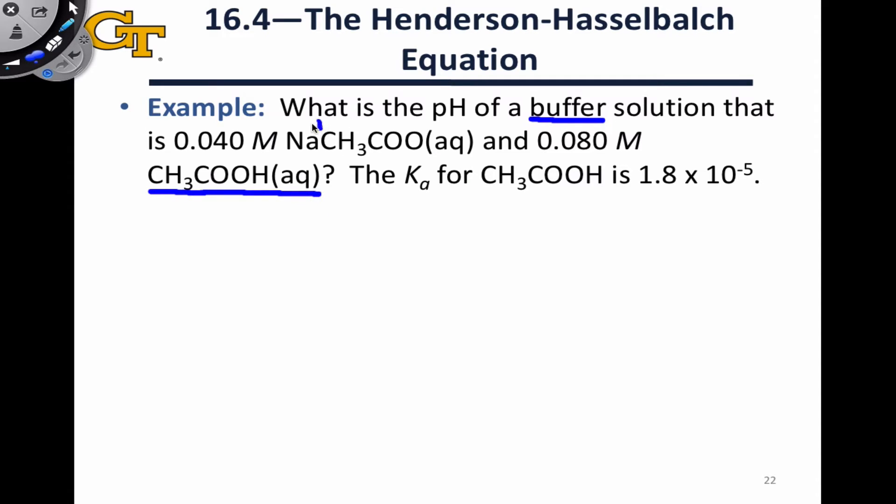Together with its conjugate base, the acetate anion in the form of sodium acetate. When we dissolve that sodium acetate in water, we end up with the acetate anion and sodium cation as well. The concentrations are given. We have 0.080 moles per liter of the weak acid, acetic acid, and we have 0.040 moles per liter of the conjugate base, sodium acetate, and therefore 0.040 moles per liter of the acetate anion.